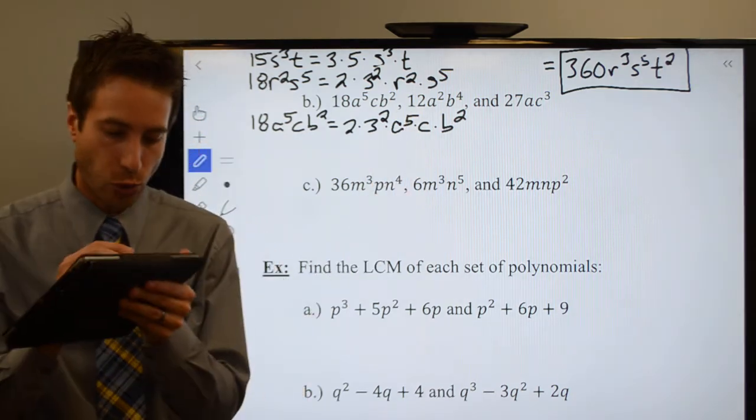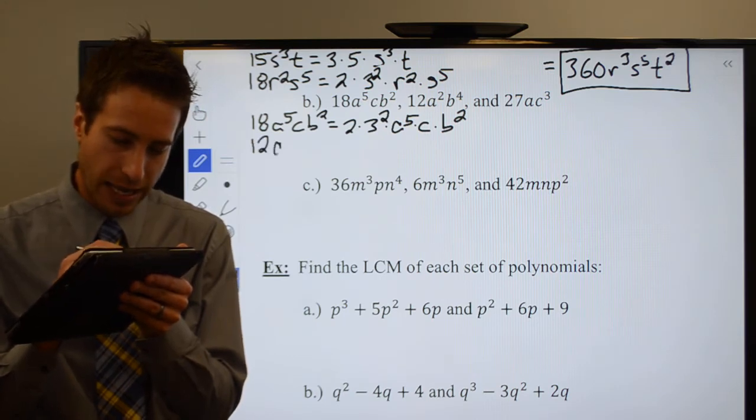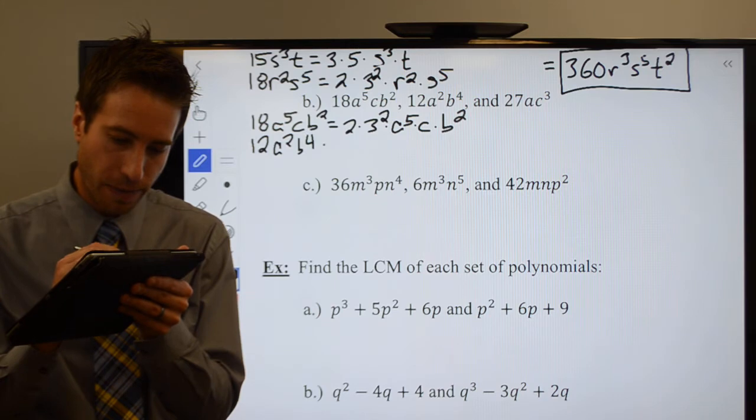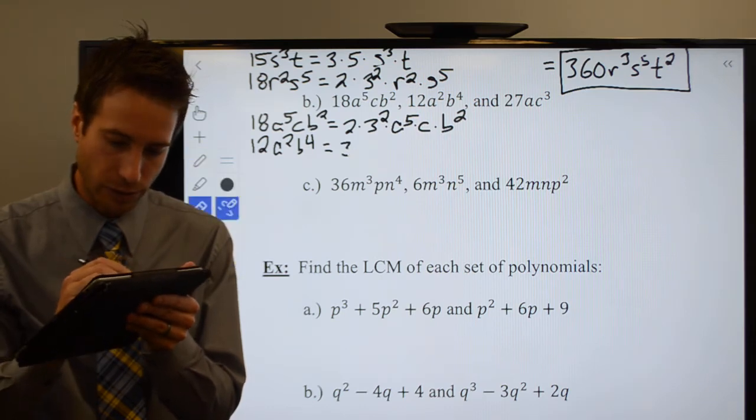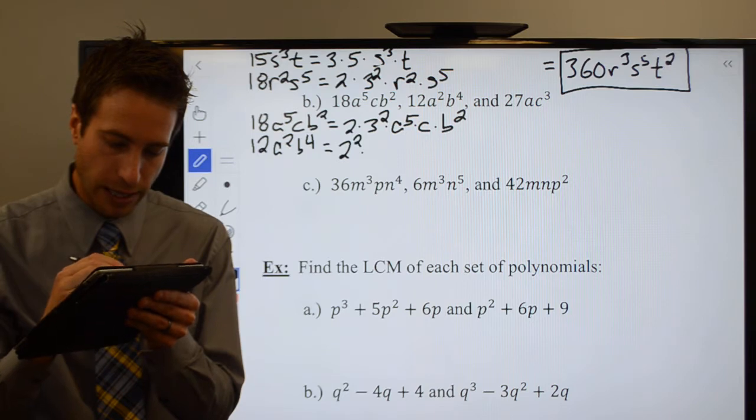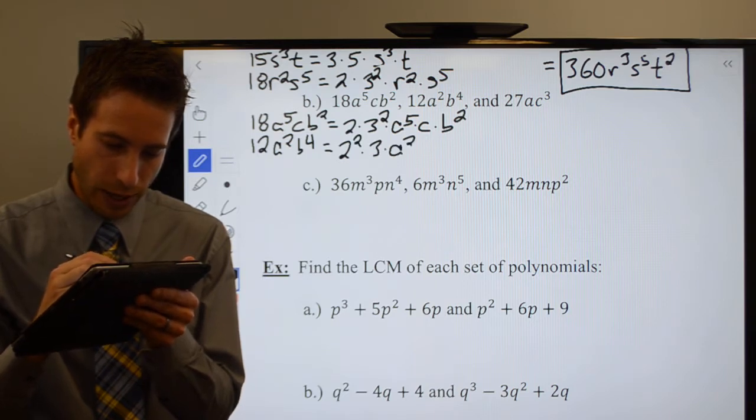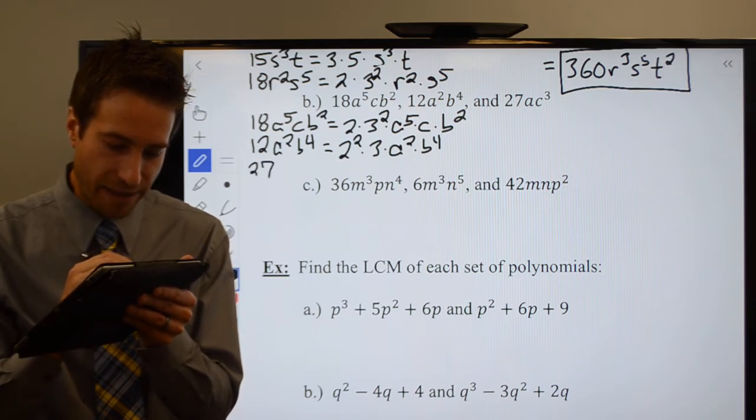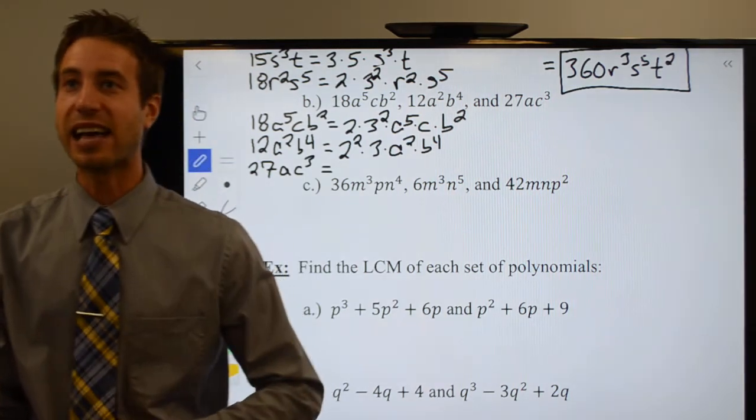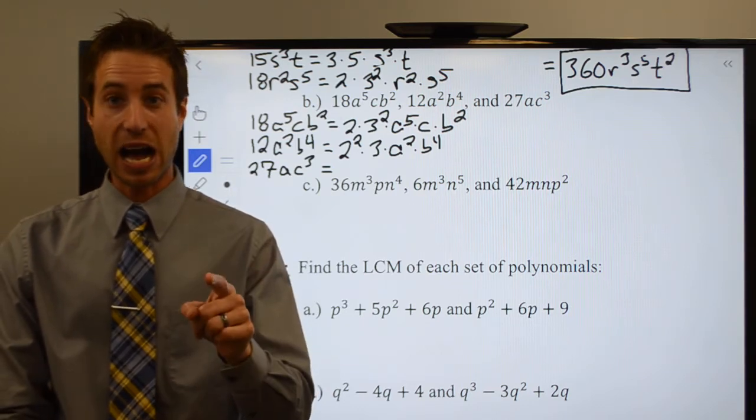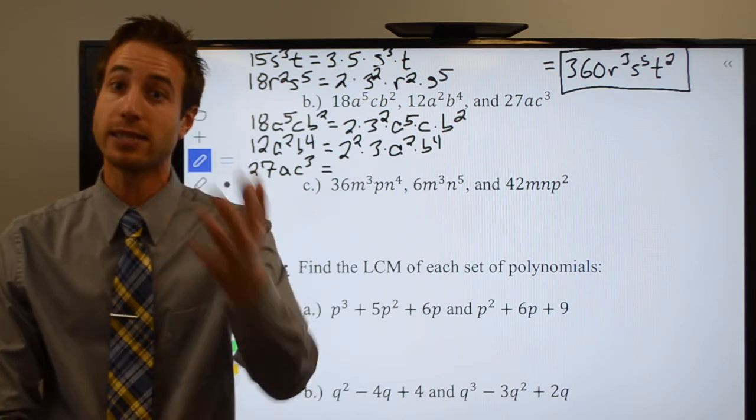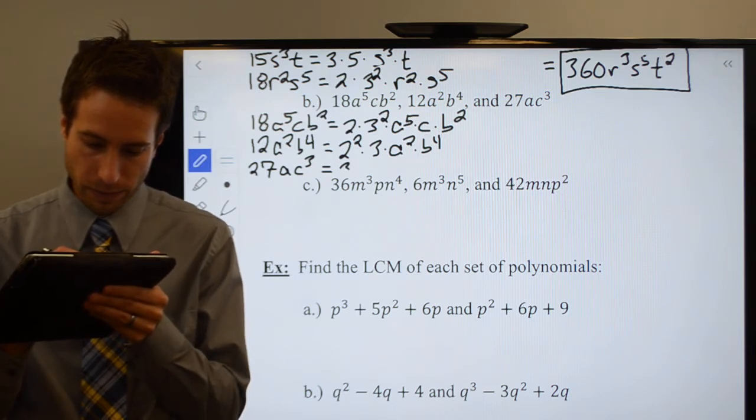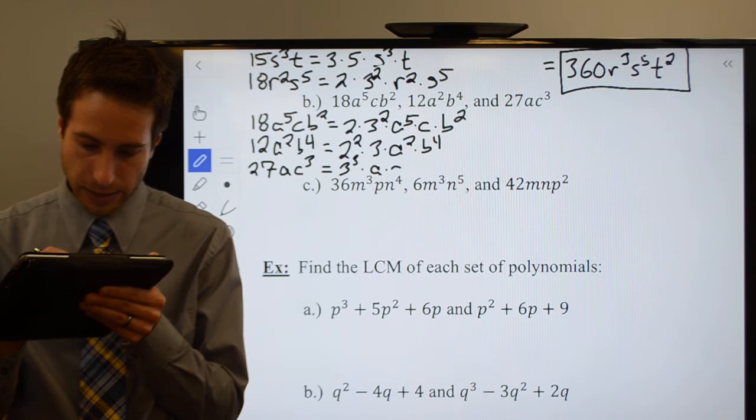12, well we've done 12 before and it's not that tricky anyway. 12a²b⁴. 12 is 3 times 4, but 4 is a 2². So 2² times 3 times a² times b to the fourth. And then finally 27ac³. Well, 27 is 3 times 9, but 9 is 3 times 3. So if you followed me there, that means you have 3 times 3 times 3, which is 3³, times a times c³.